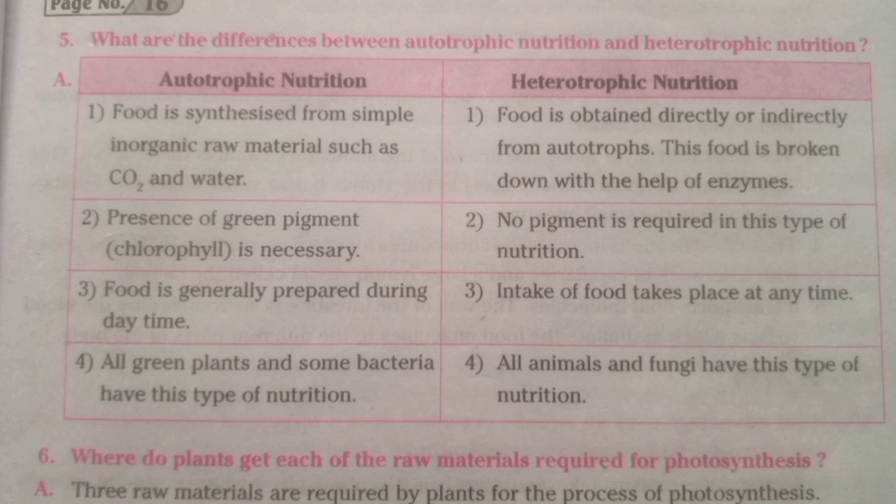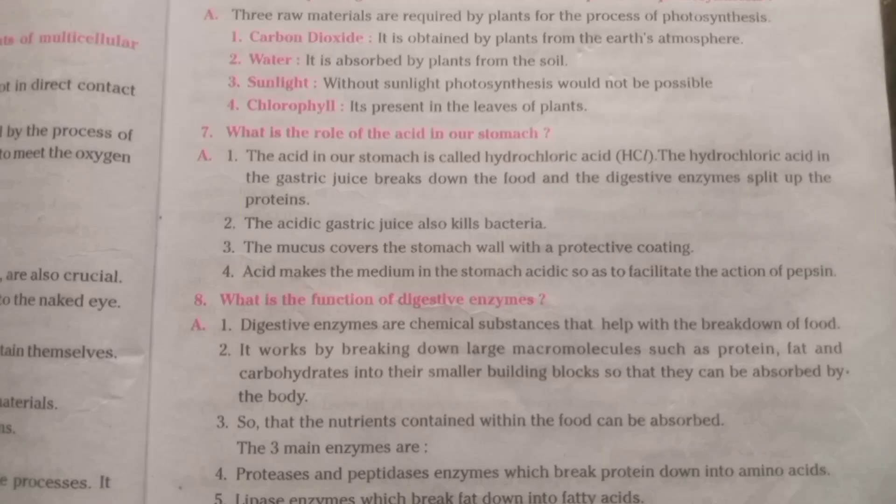Where do plants get each of the raw materials required for photosynthesis? Three raw materials are required by plants for photosynthesis. Carbon dioxide is obtained by plants from the Earth's atmosphere. Water is absorbed by plants from the soil. Sunlight is also essential — without sunlight, photosynthesis would not be possible. Chlorophyll is present in the leaves of plants.